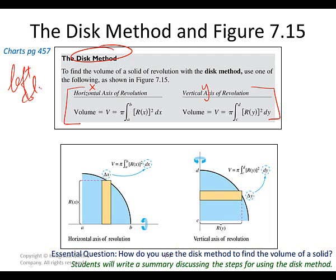Good news — we're going to cross out example seven and keep six. We have to sketch the region and find the area again. We need to figure out what this is going to look like — it's going to be a parabola lying on its side because it's y squared instead of x squared.